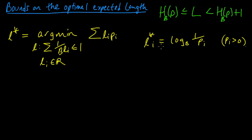Those are the best values, but we're not guaranteed they'll be integers, and we certainly need integer-valued codeword lengths to actually construct a code. You might say let's just round them off to the nearest integers — but if we round them off, some will get smaller and some might get bigger.